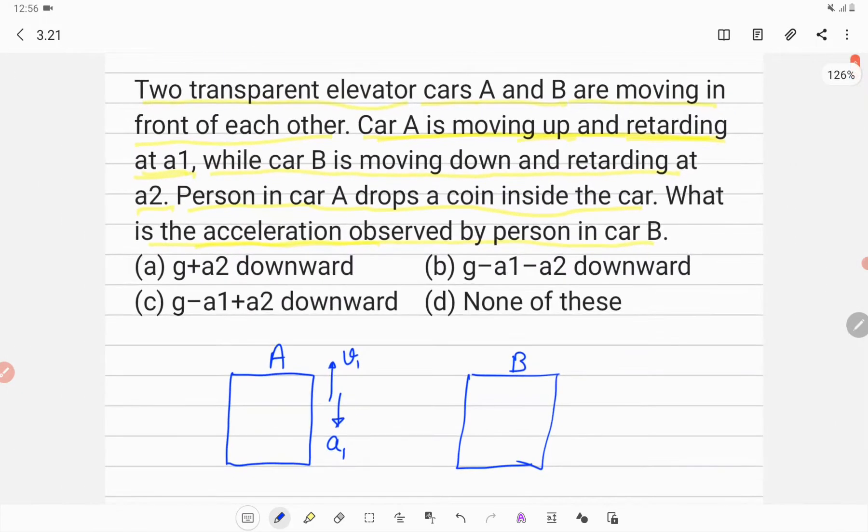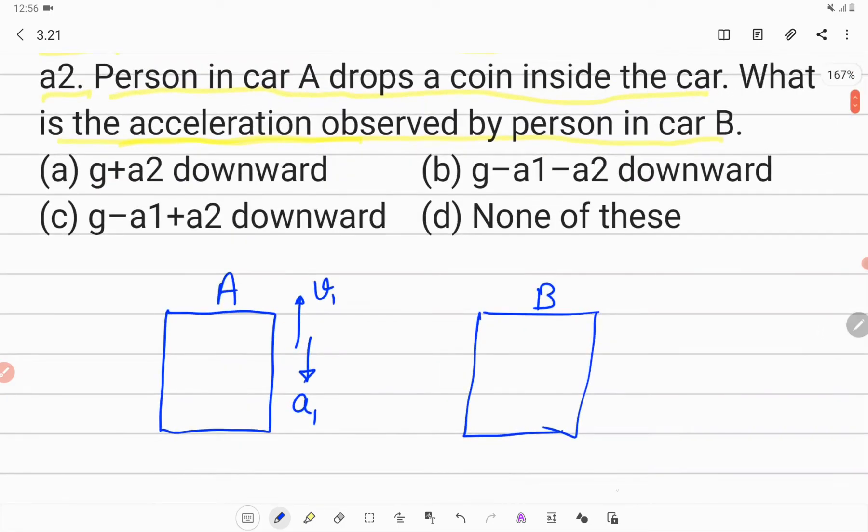Car B is moving down and retarding at A2. So car B which is moving down with some velocity is retarding, so its acceleration should be in the upward direction which is given as A2.